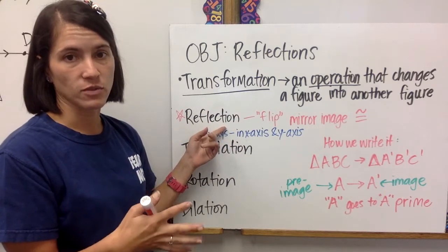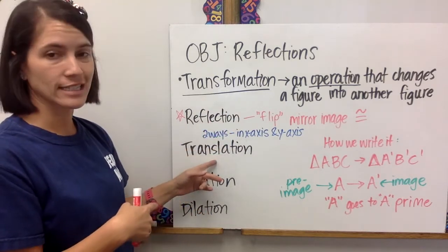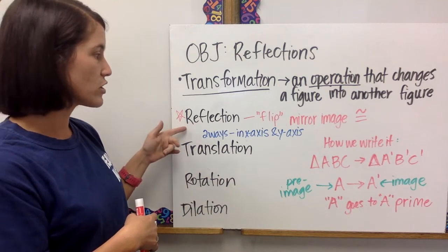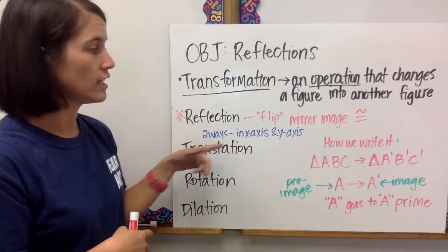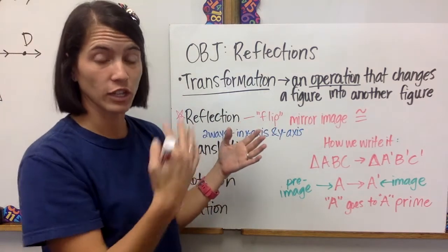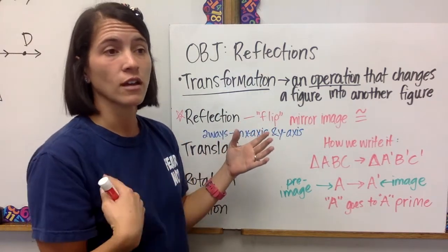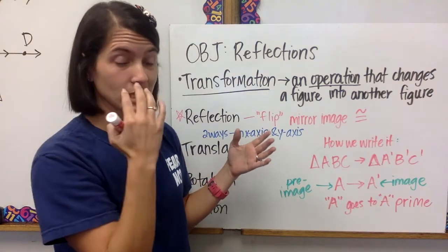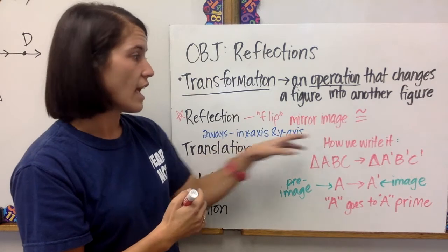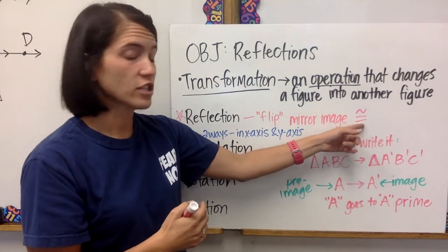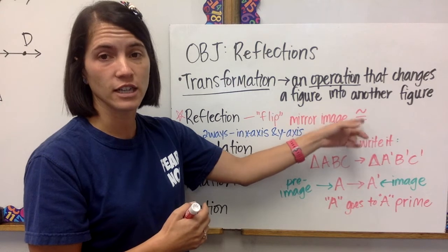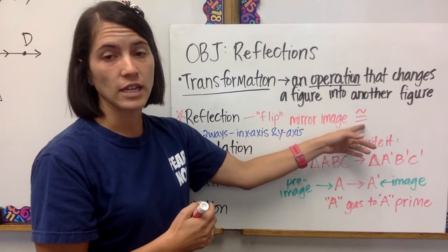One is a reflection — that's what we'll focus on today — along with translation, rotation, and dilation. A reflection is a flip. It's a mirror image. Like when you look in the mirror, you notice that the words are backwards because it is a mirror image. It just flips it over. And if you reflect a shape, a polygon, the two will be congruent.